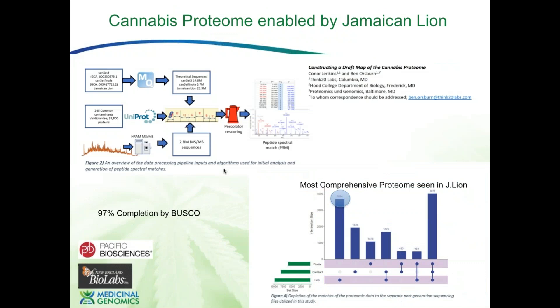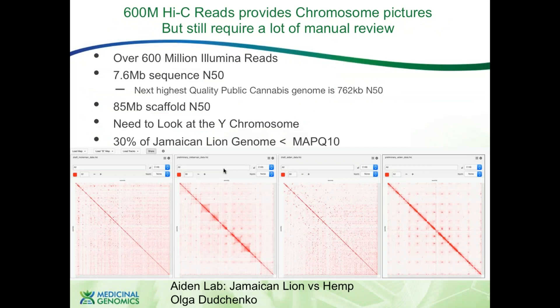The best peer review you can get is someone else downloading your data and getting a publication out before you. A group in Maryland looked at the cannabis proteome and found that the Jamaican line contains most of the proteome, which lines up with our Busco results. The Aiden Laboratory also downloaded data and drastically improved our Hi-C maps. There is still some haplotype contamination we're sorting through, and we think the Pan Genome Project we're about to display will resolve a good portion of that.